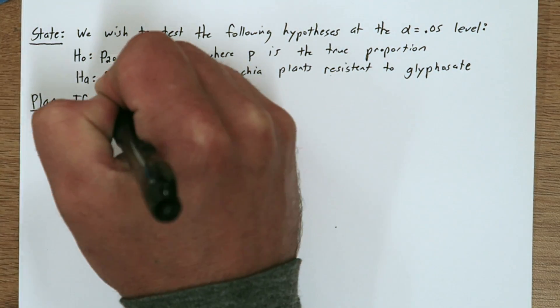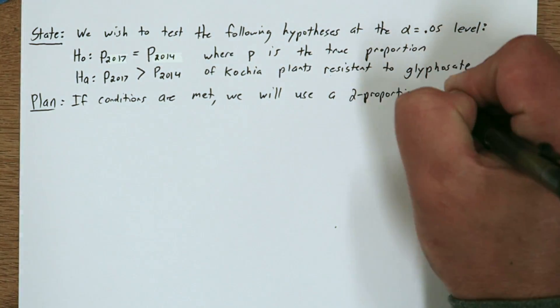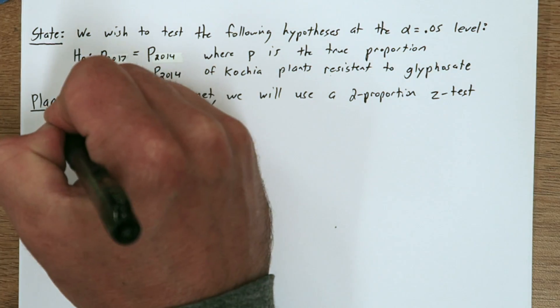In the plan step, we need to state our inference method and check conditions. If conditions are met, we'll use a two-proportion Z-test.